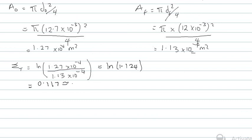You can approximate the true strain to 0.12. Remember that strain is always unitless because the units in the numerator and denominator cancel. So there you have it — we calculated our true stress and true strain without needing to pass through engineering stress and strain values. In the next example, we will follow the full process including engineering stress and strain. See you in the next video.